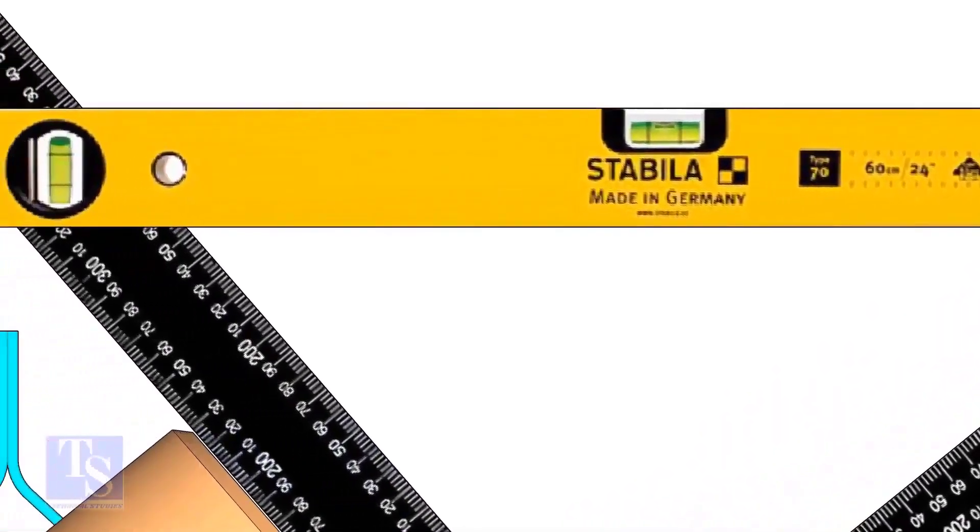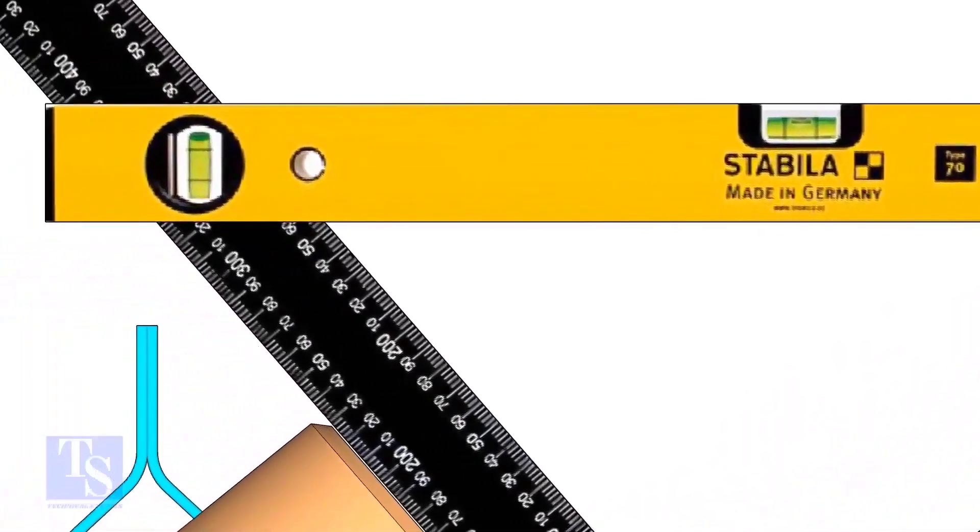Rotate the T, holding the right angle and the level bottle firmly, until the level bottle is in level.